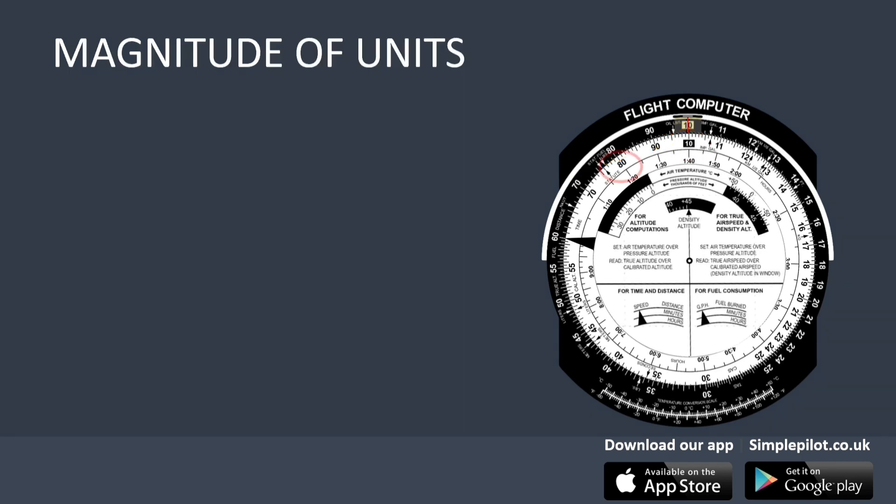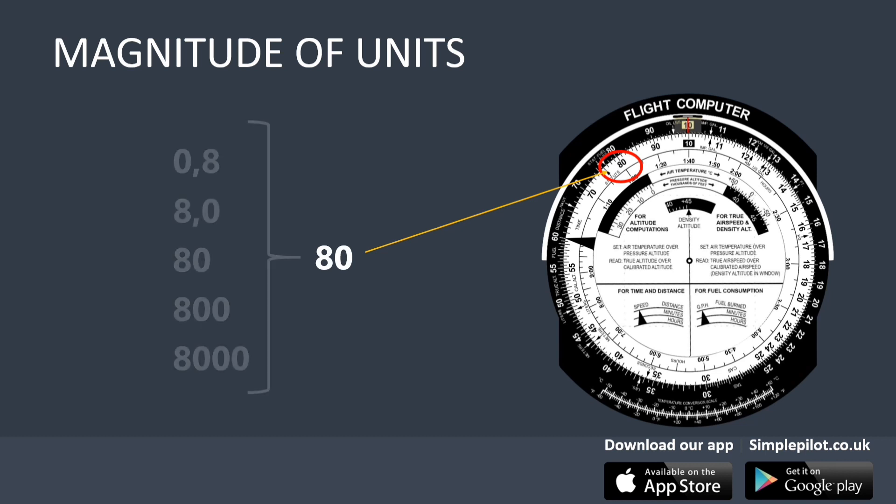When using the flight computer, it is important to know how to correctly interpret which order of magnitude corresponds to the result. For example, the number 80 in the scale can be interpreted as 0.8, 8, 80, 800, or 8,000, depending on the type of calculation we are making. To obtain a correct result, we will have to use common sense to determine the order of magnitude that matches the result.